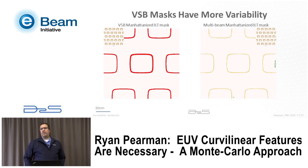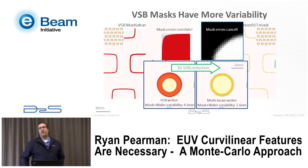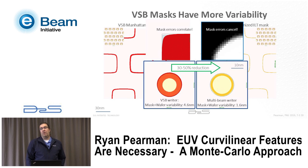Let's print it with a multi-beam tool instead. Visually the mask variability band is quite a bit less, and zooming in to the wafer scale you'll see the variability drops from 4.6 nanometers to about 1.6 nanometers. The reason is simple: for a VSB tool the entire contact is one exposure, so any error shifts the entire contact all at once. Whereas with a multi-beam tool, you need tens to hundreds of pixels to all move in the same direction simultaneously to get the same effect — the errors just cancel out.